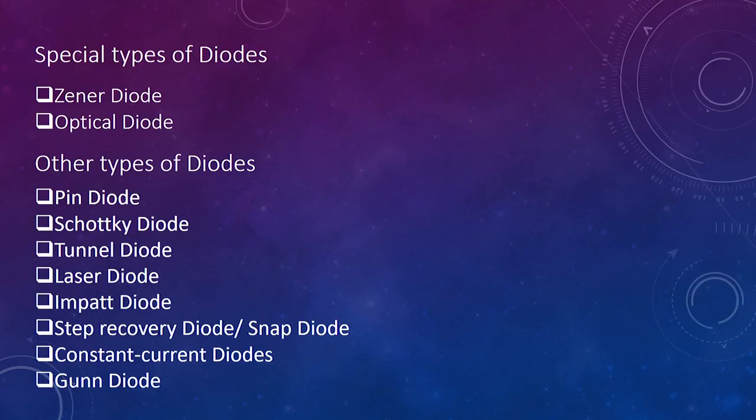There are two special types of diodes: the Zener diode and the optical diode. But there are also other types of diodes: the PIN diode, the Schottky diode, tunnel diode, laser diode, IMPATT diode, step recovery diode or snap diode, constant current diode, and the Gunn diode.